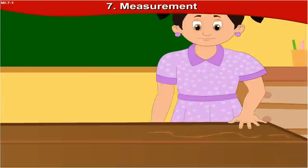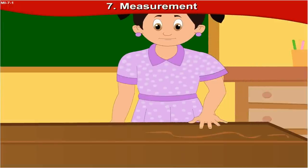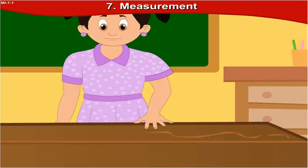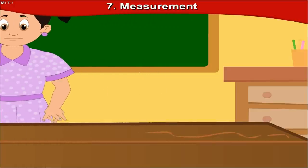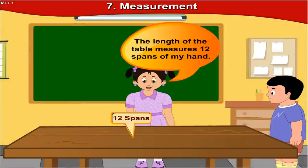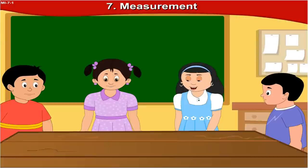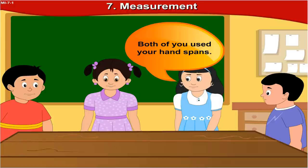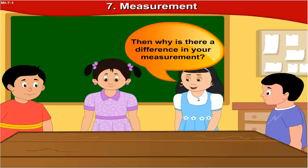Now I'll measure. The length of the table measures 12 spans of my hand. Oh, how's it possible? Both of you used your hand span. Then why is there a difference in your measurement?